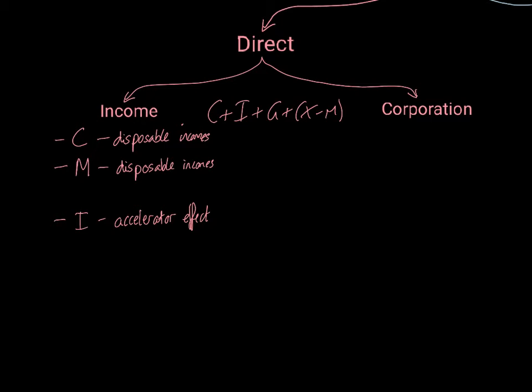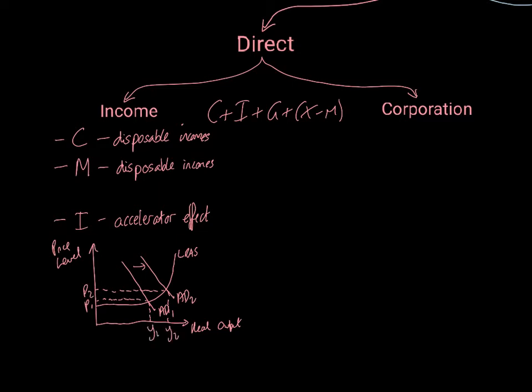So what do we see from all of those then? With all of those, we have the fact that if we have our price level and real output here, if we have a cut in income tax, what we will see then is a shift to the right like this, and a change in the macroeconomic environment like that. So that's what we get as a result of direct taxes on income.